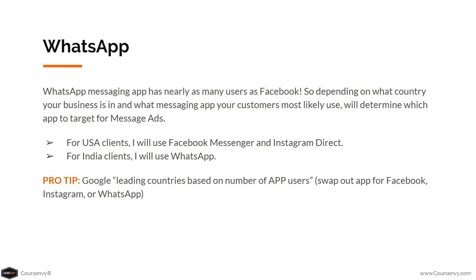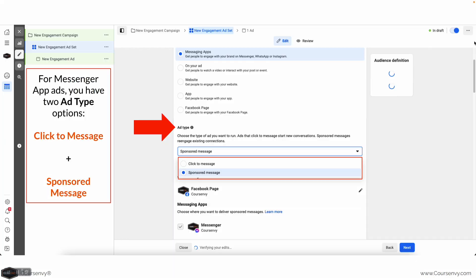Pro tip: Google leading countries based on number of app users — you can swap out the app name for Facebook, Instagram, or WhatsApp, and various stat websites will tell you which country favors which app. For Messenger app ads you have two ad types: first, Click to Message; second, Sponsored Message.